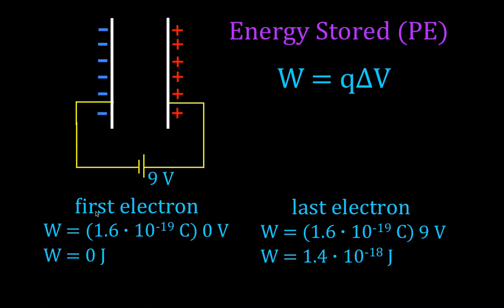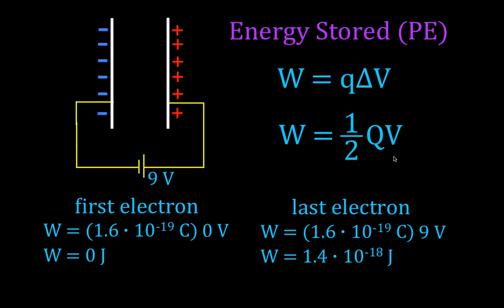The first electron required zero joules; this last electron required 1.4 × 10⁻¹⁸ joules. If we add all of them up — the first is 0, then each subsequent electron moves through a little more potential difference, more and more until the last one — we can see that the total work is equal to one-half the total charge moved times the potential difference through which it's moved. So the energy stored is equal to one-half times Q times V, written as W = ½QV.